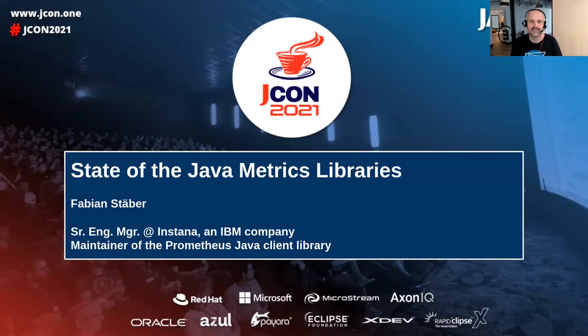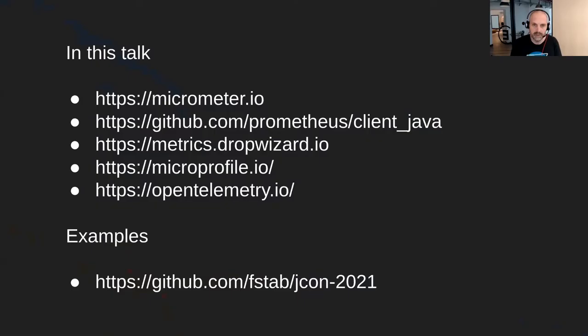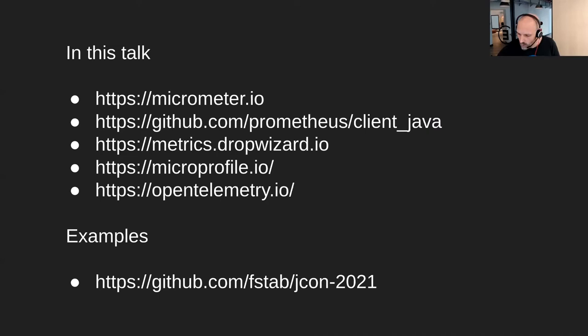Let's get started. This first slide is for reference if you watch this later on YouTube. I'm going to show you Micrometer, the Prometheus Java client library, Dropwizard Metrics, and then two standards: the MicroProfile standard and the OpenTelemetry metrics standard. I'll show you code examples for each of these.